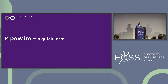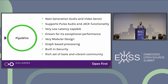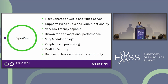First let me introduce PipeWire. PipeWire is basically a next-generation audio and video server. It greatly enhances the way audio and video is handled by Linux. For example, audio and video didn't have a unified API, and PipeWire fills that gap.